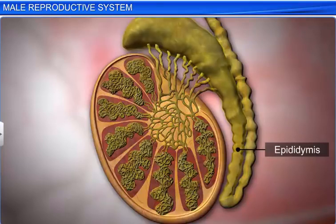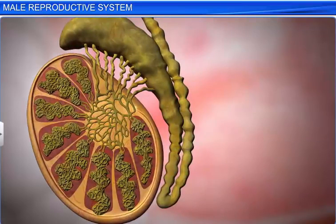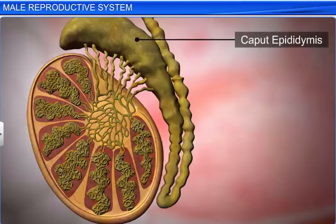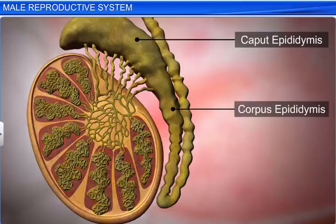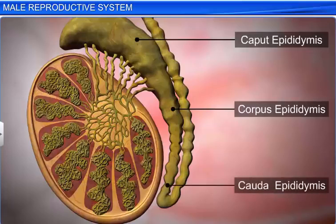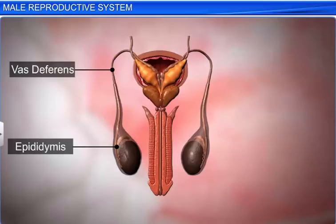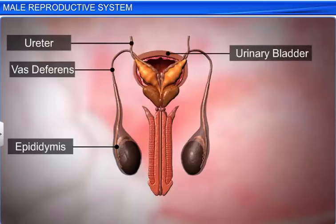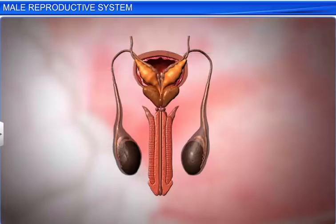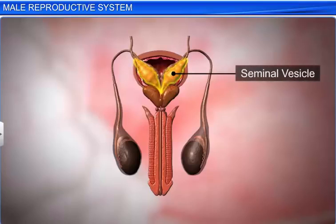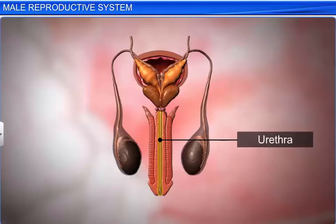The epididymis is a long, narrow, highly coiled tubule present along the posterior surface of the testis. It is divided into three parts: the head (caput epididymis), middle (corpus epididymis), and posterior (cauda epididymis). The epididymis stores the sperms temporarily and nourishes them. It leads to the vas deferens, which ascends into the abdomen, curves around the ureter, and loops over the urinary bladder. It extends backwards, receives the duct from the seminal vesicle, and finally opens into the urethra as an ejaculatory duct.